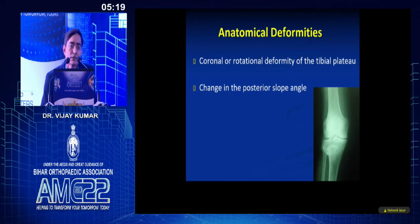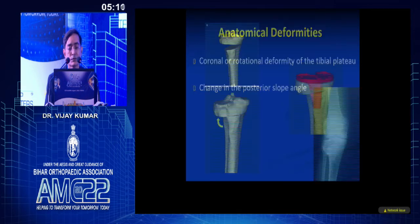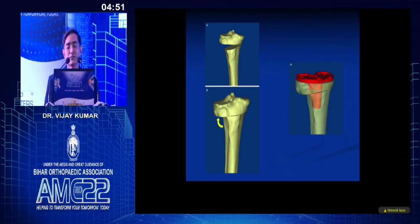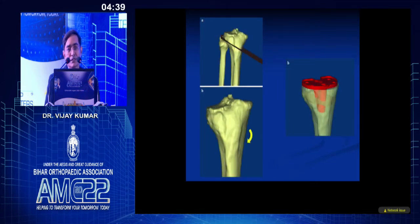Anatomical deformities post-HTO occur in both the coronal plane and the rotational plane of the tibial plateau, and there is often a change in tibial slope. In a lateral closing wedge osteotomy, the deformity is much more marked. For total knee replacement, you have to place your tibial component flush with the medial side, not the lateral side, because there will be offset and interference with the shaft, and often rotation proximally as well.